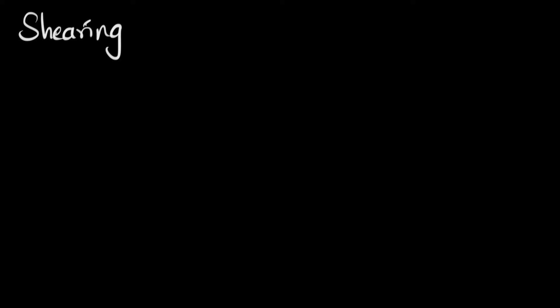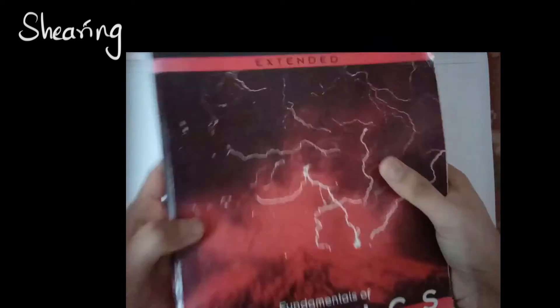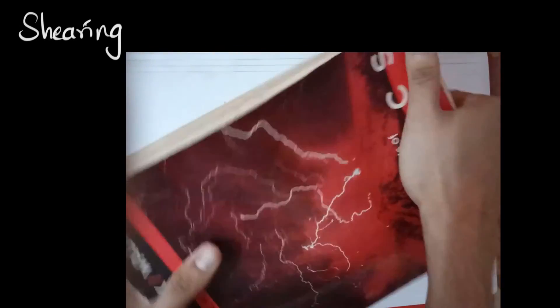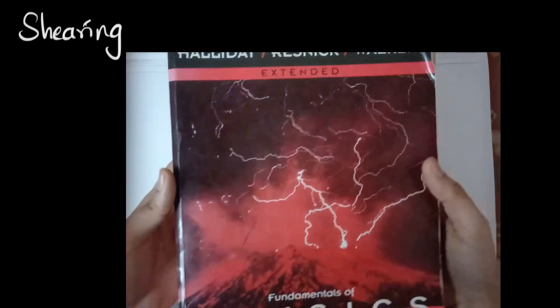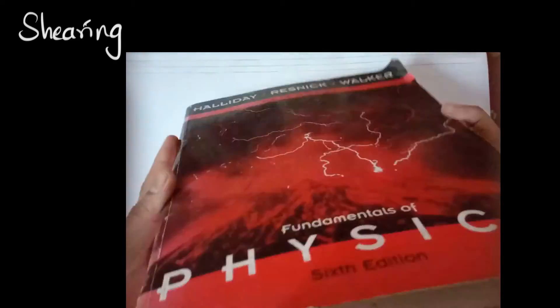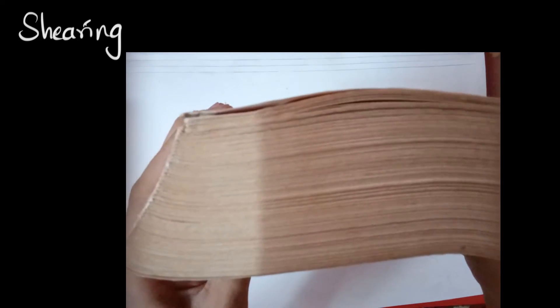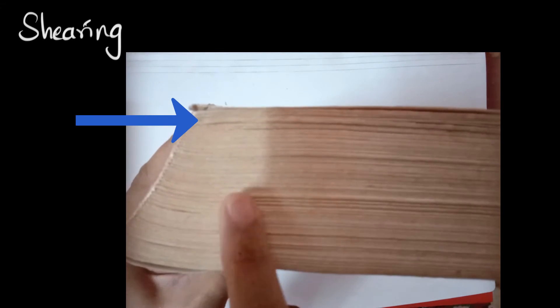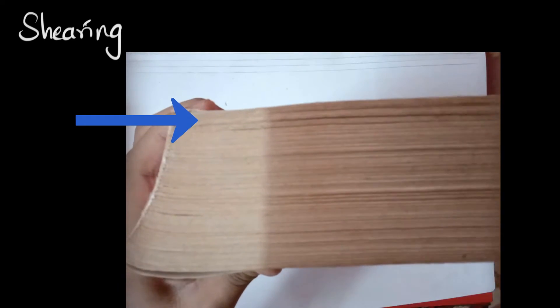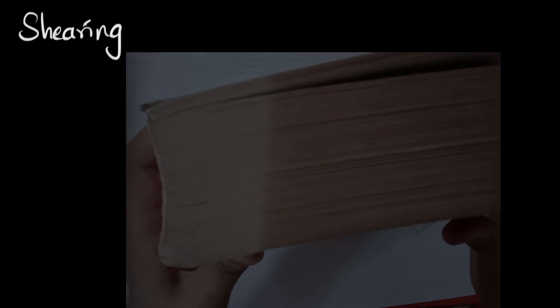I think one of the best examples to understand shearing is by taking a book. If you take a thick book like this, it's very strong under compression and tension. It's extremely difficult to distort it or deform it by compressing it or by pulling it apart. But notice, just with my fingers, I can easily deform it in a different way.